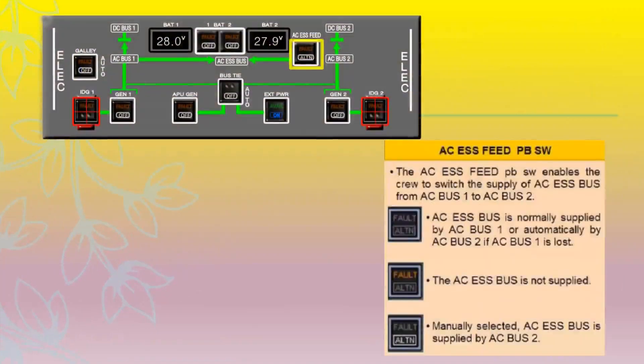The AC essential feed pushbutton switch enables the crew to switch the supply of the AC essential bus from AC bus 1 to AC bus 2. When no lights are on, the AC essential bus is normally supplied by AC bus 1, or automatically by AC bus 2 if AC bus 1 is lost.